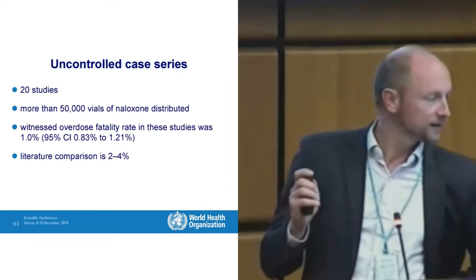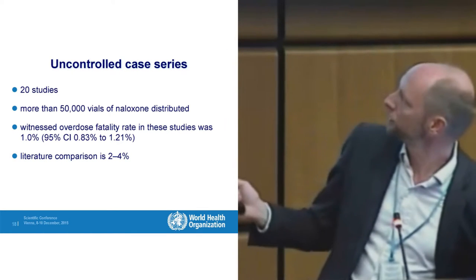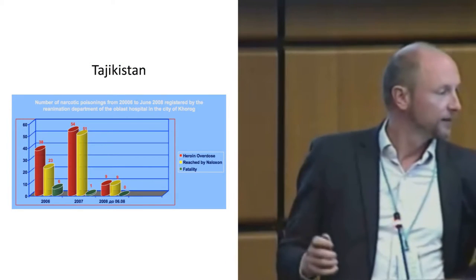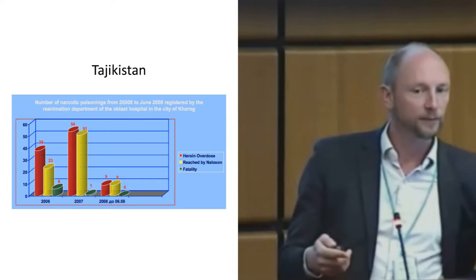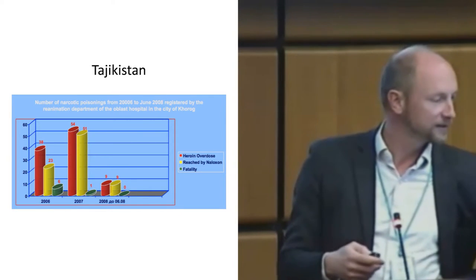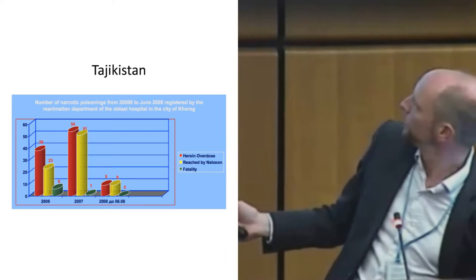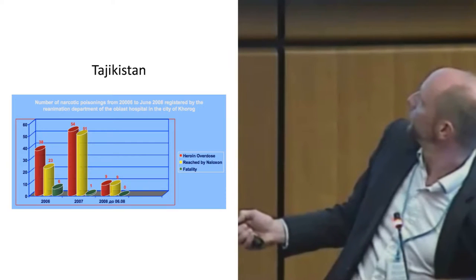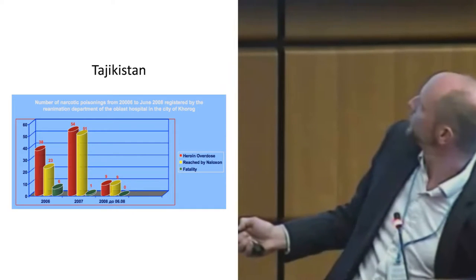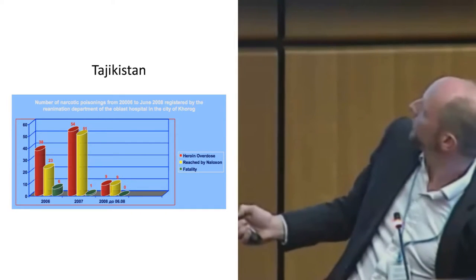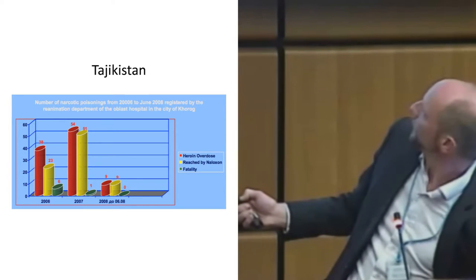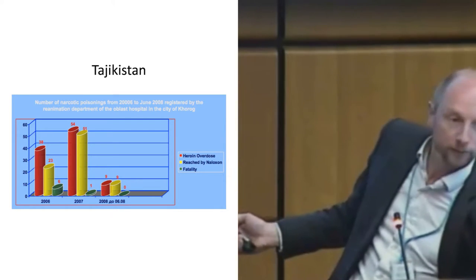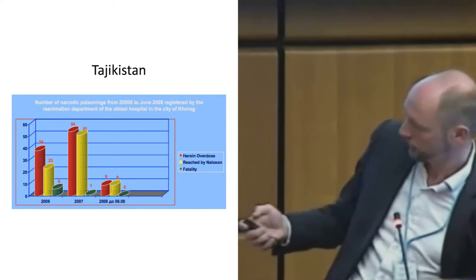A simple example from Tajikistan illustrates the impact: in 2006, there were 38 overdoses, 23 received naloxone, and 6 died. With increased naloxone availability the following year, even though there was an increase in overdoses, almost everybody received naloxone and there were far fewer deaths.